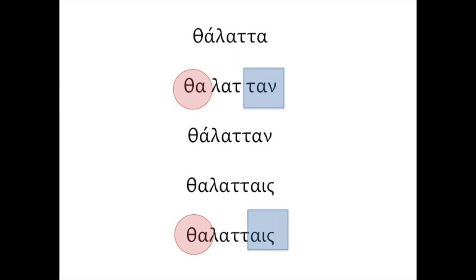Nouns accented on the antepenultima act just like verbs in terms of accentuation. Take the word thalatta, which means 'sea.' If the nominative singular is accented on the antepenultima, that's where it wants to be. In the second form, thalattas, you look at the final syllable. An alpha can be long or it can be short — in this case, the ending alpha is short. Therefore the accent remains on the antepenultima.